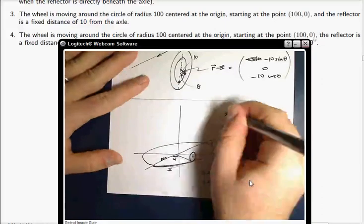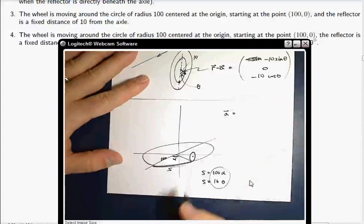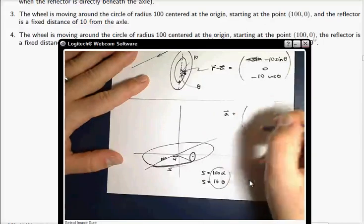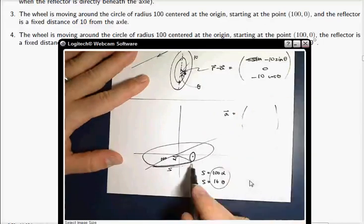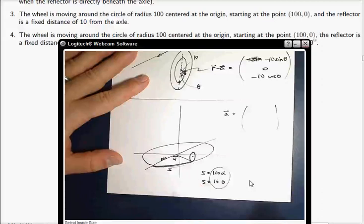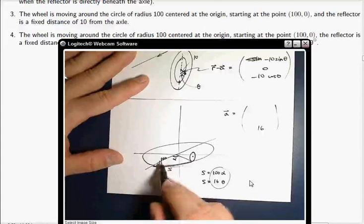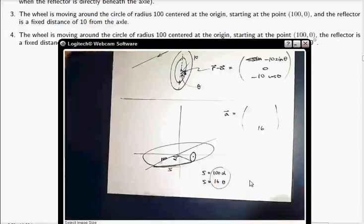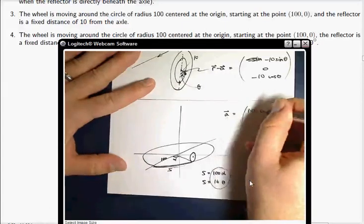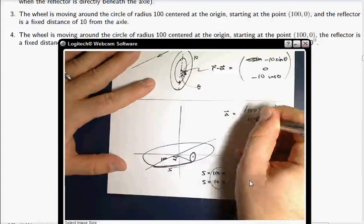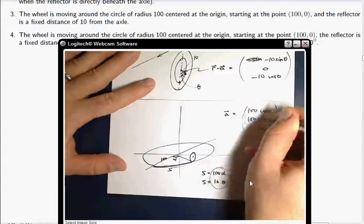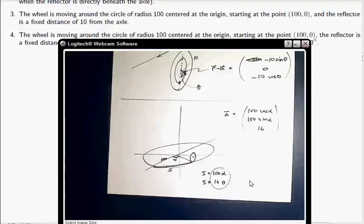So we'll substitute alphas and thetas later. But for the moment, let's just try to write down where things are. The axle is, conveniently, Z is always 16. So that's nice. And the X and Y coordinates - well, it's got a radius 100 going around. So this is just 100 cosine alpha, and this is 100 sine alpha. So there's our axle position.